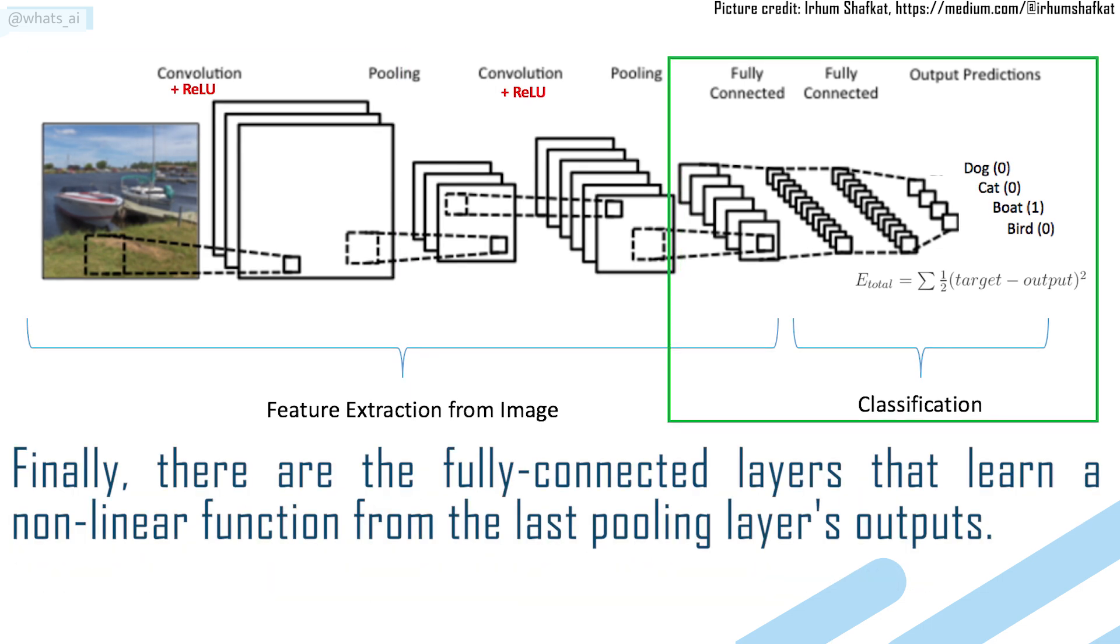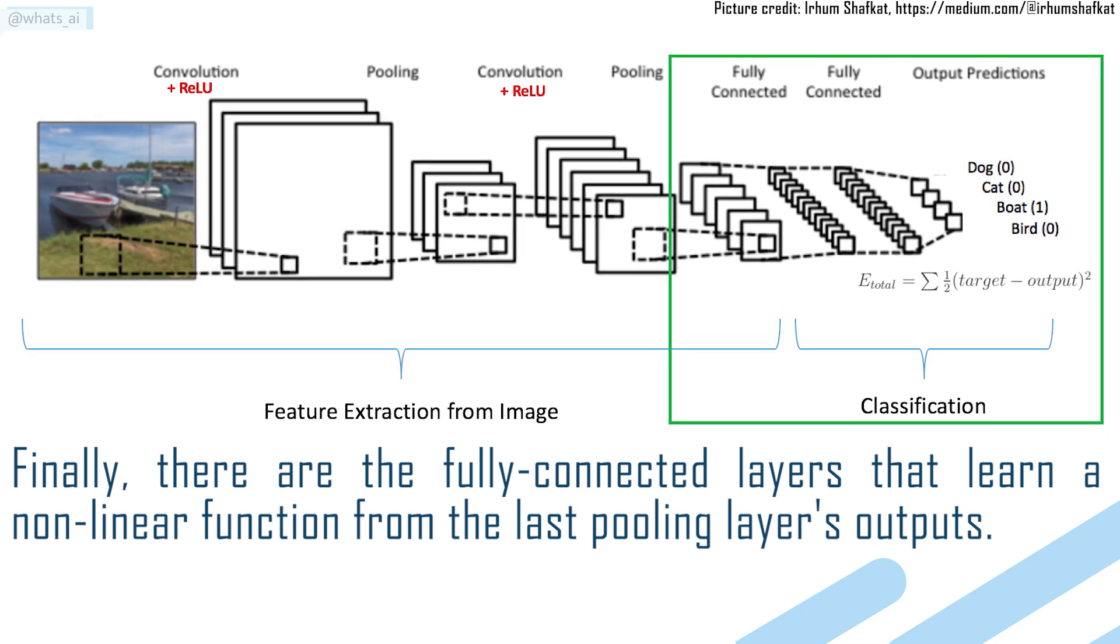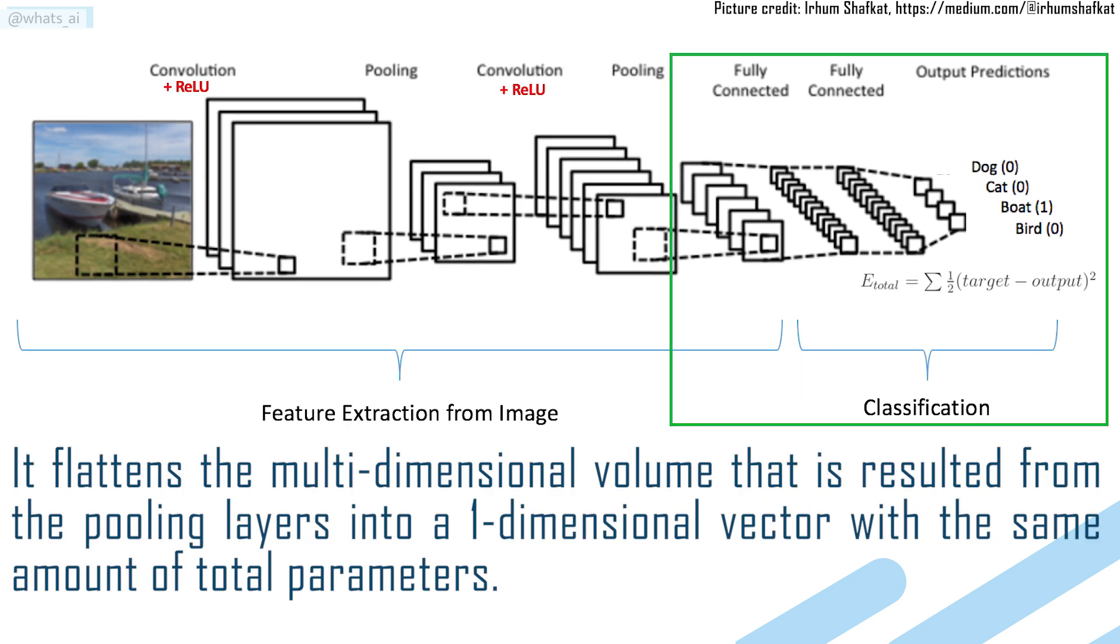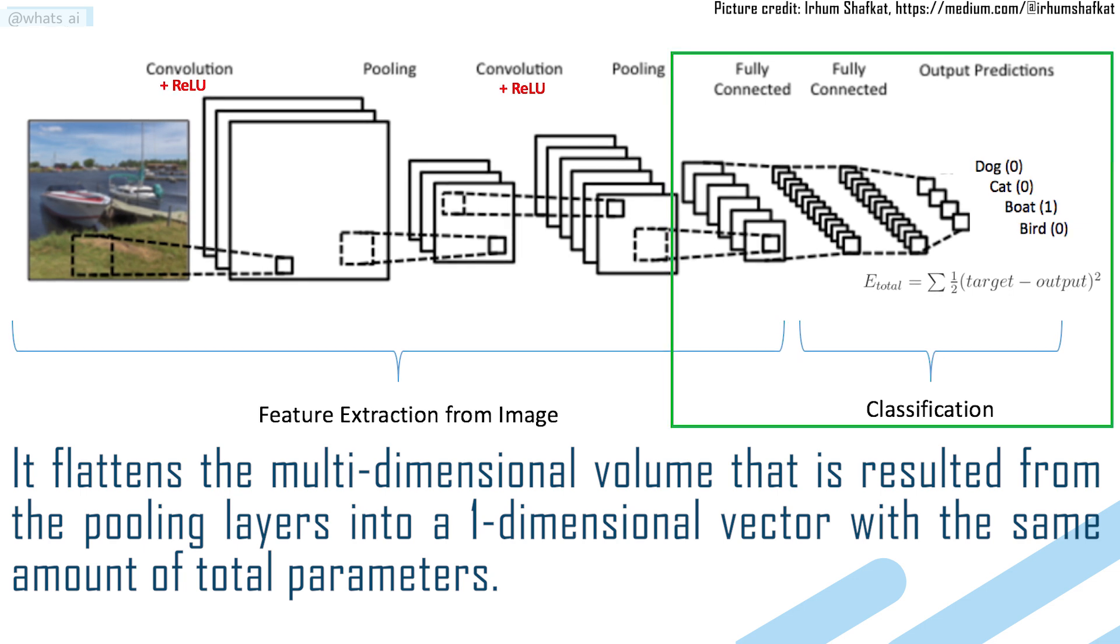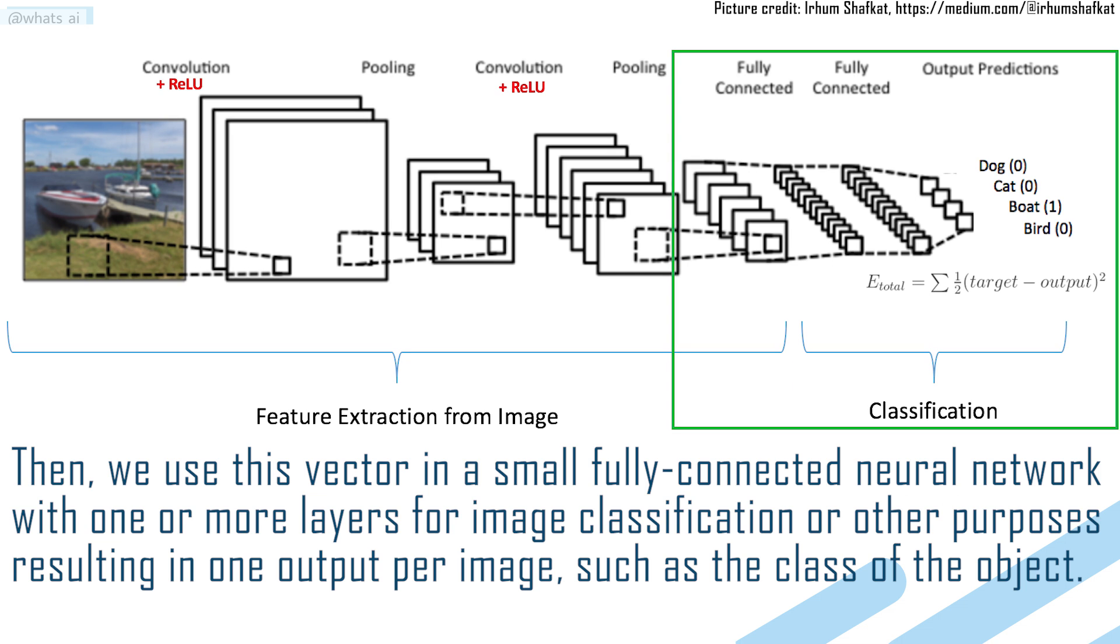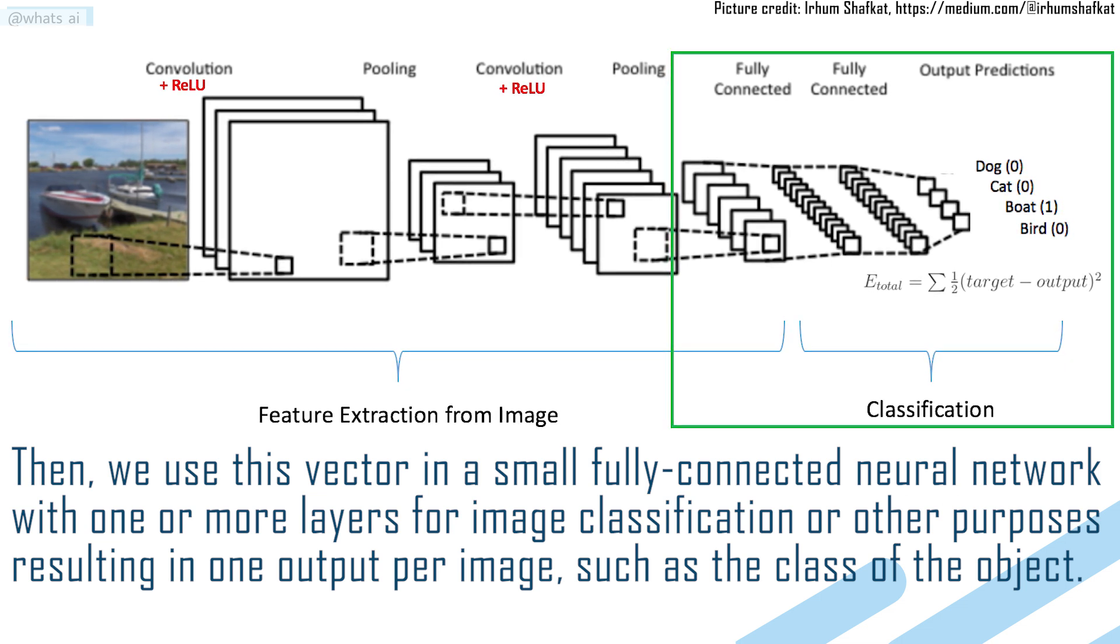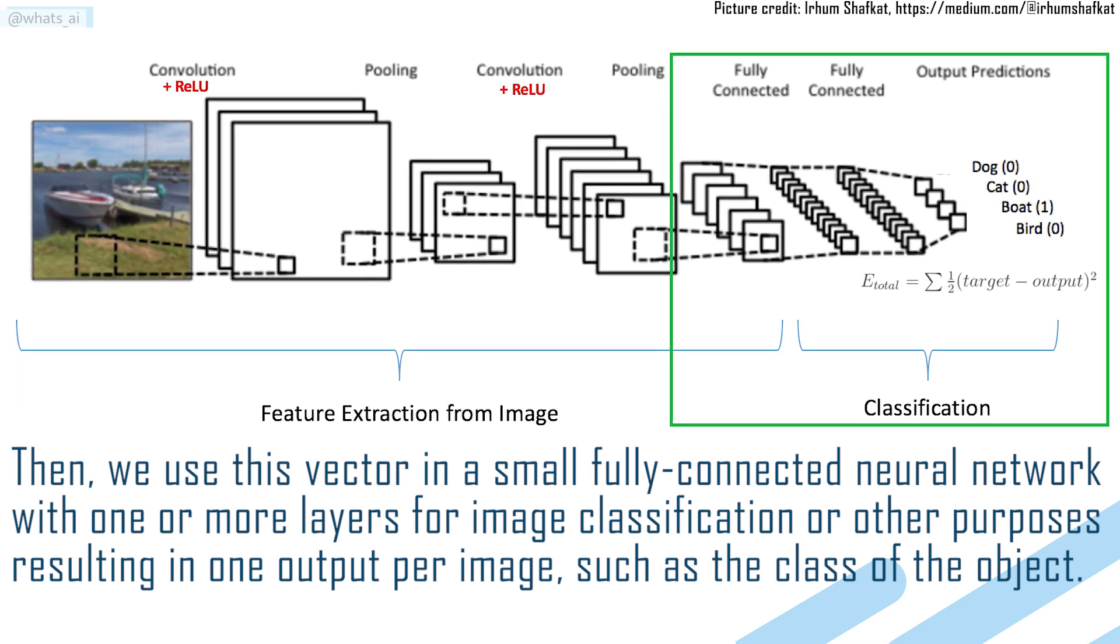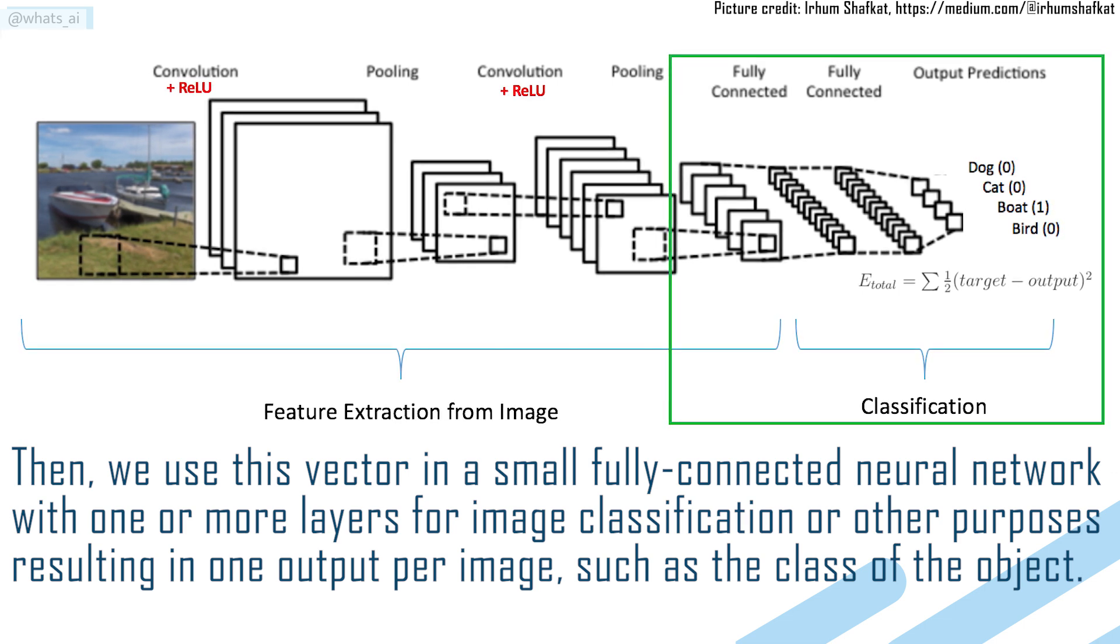Finally, there are the fully connected layers that learn a nonlinear function from the last pooling layer's outputs. It flattens the multi-dimensional volume that resulted from the pooling layers into a one-dimensional vector with the same amount of total parameters. Then we use this vector in a small fully connected neural network with one or more layers for image classification or other purposes, resulting in one output per image, such as the class of the object.